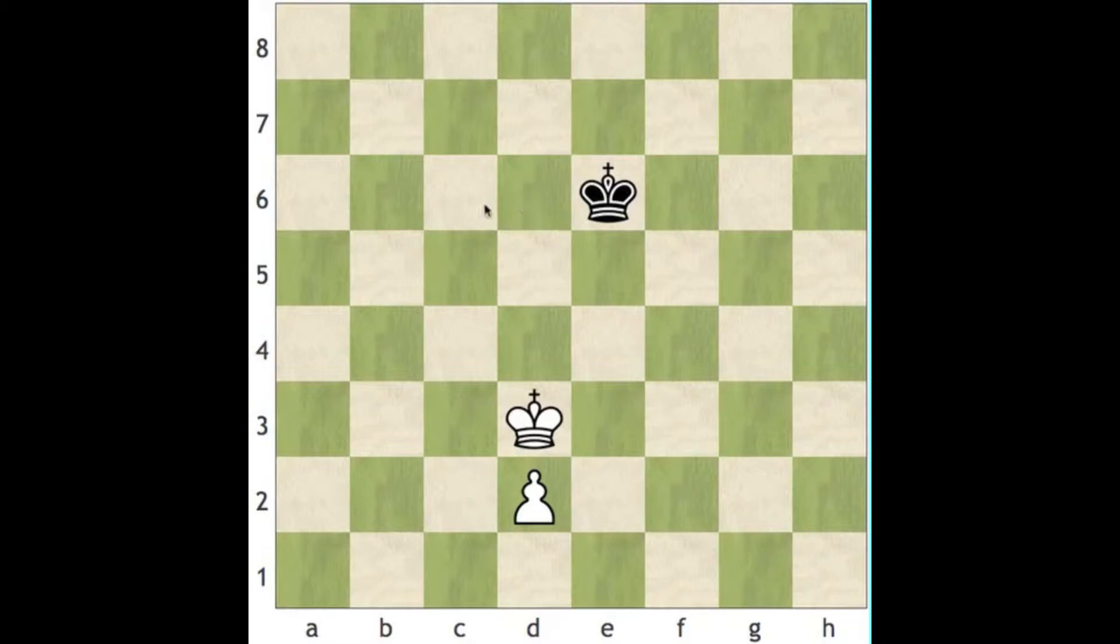Actually the theoretical result of this depends on whose turn it is. If it's black's turn then it's actually going to be a draw and if it's white's turn it's going to be a win for white. The reason it's going to be a draw for black is because if it's his turn he can just simply come in and take what's called the opposition and sort of maneuver around and not let your king go anywhere.